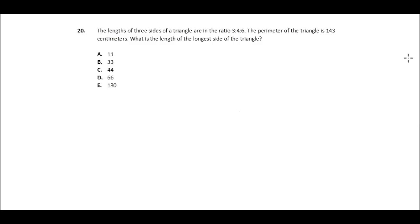What we're going to do here is just read the question quick and then we'll solve it. The lengths of three sides of a triangle are in the ratio of 3 to 4 to 6. The perimeter of the triangle is 143 centimeters. What is the length of the longest side of the triangle?